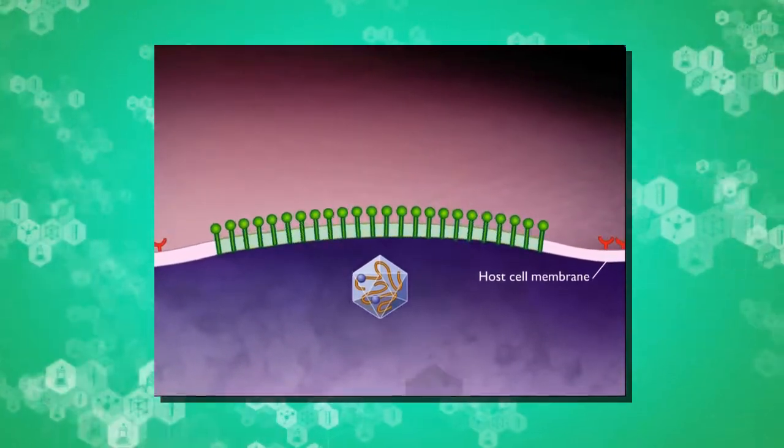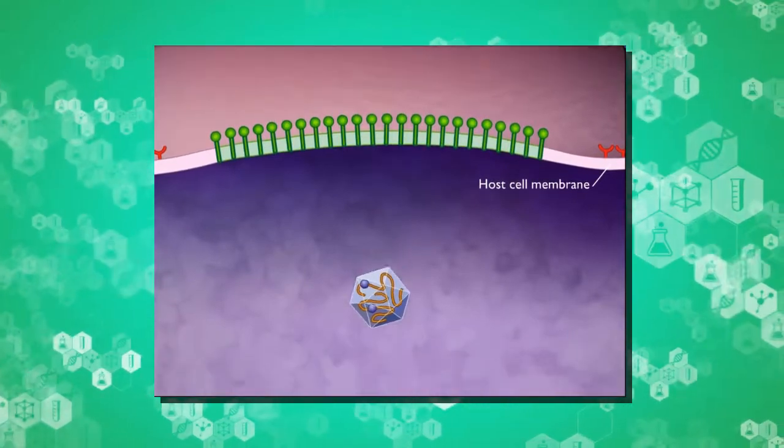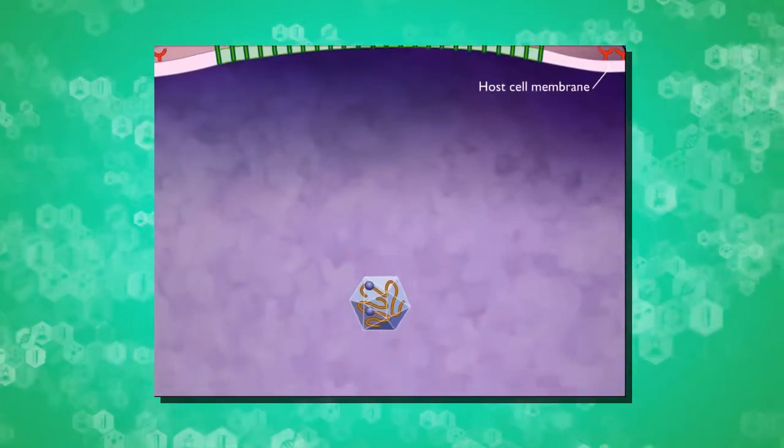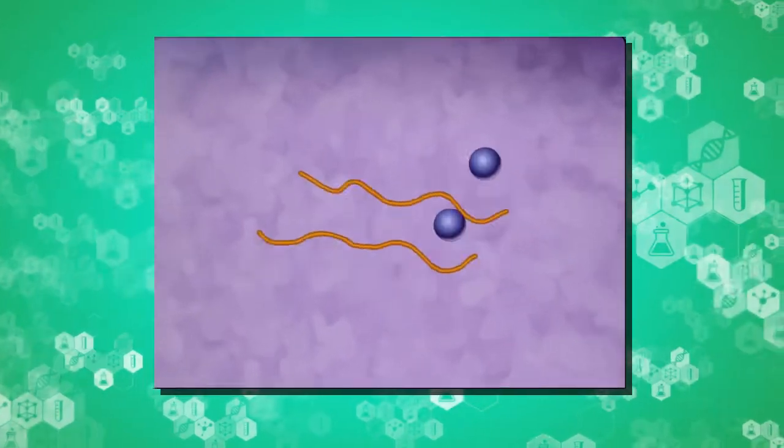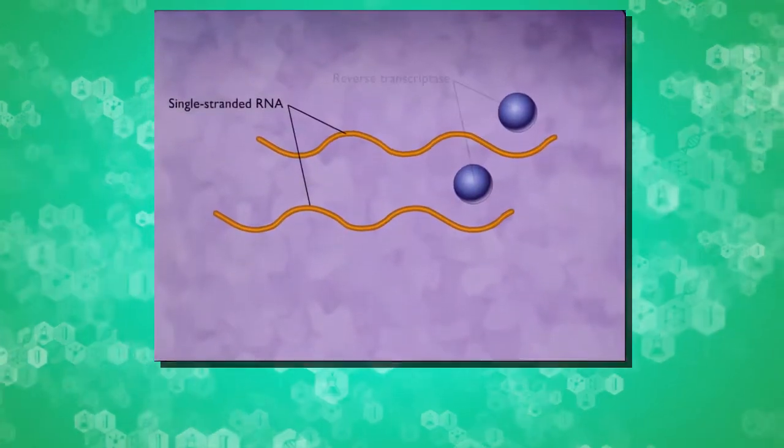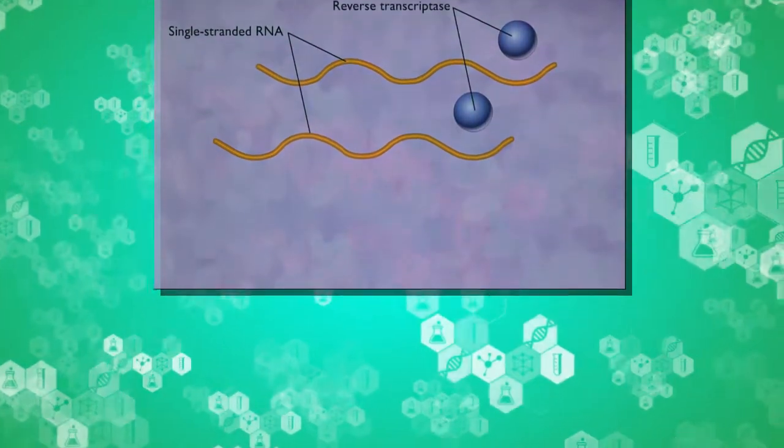Sometimes a retrovirus puts its DNA into the DNA of an egg or sperm cell. When this happens, it becomes heritable. You can inherit it from your parents and pass it down to your offspring. These heritable bits of viral DNA are called ERVs, endogenous retroviruses.